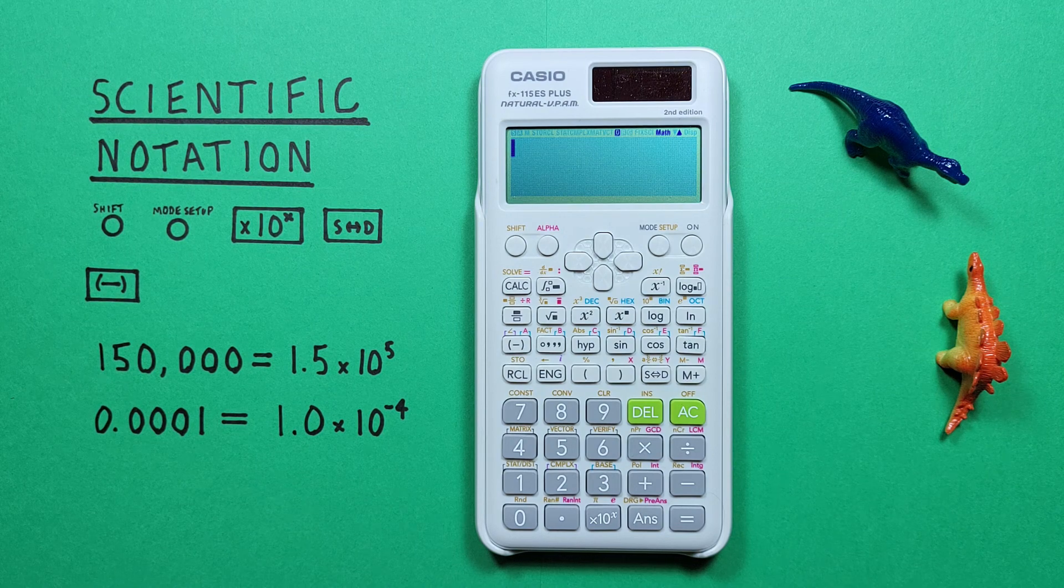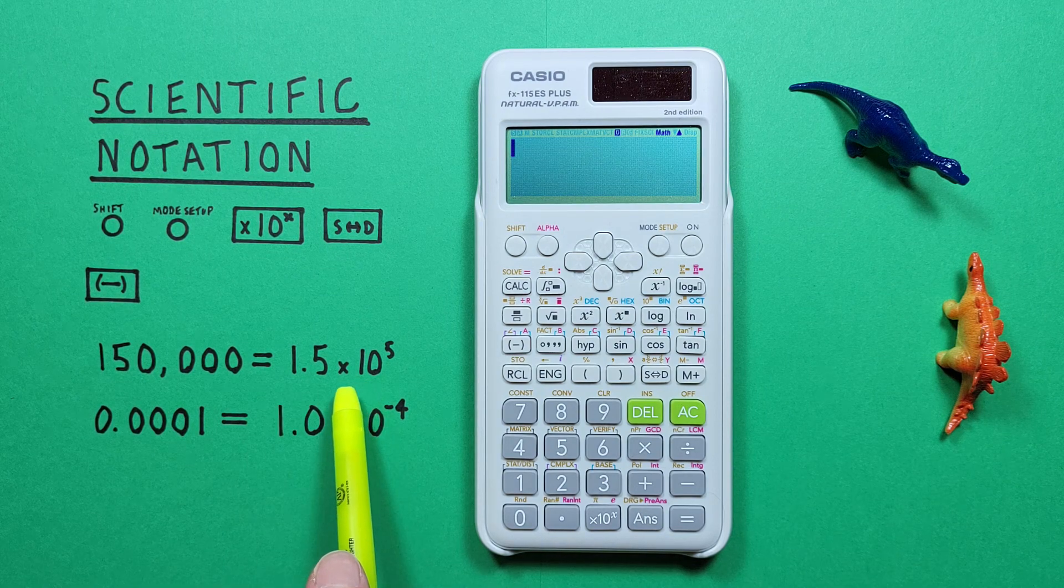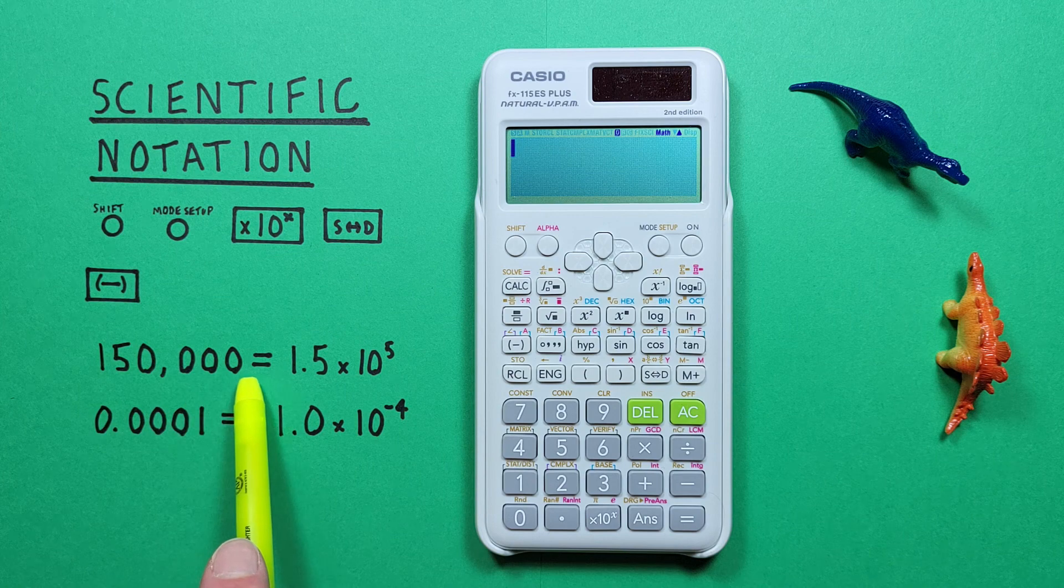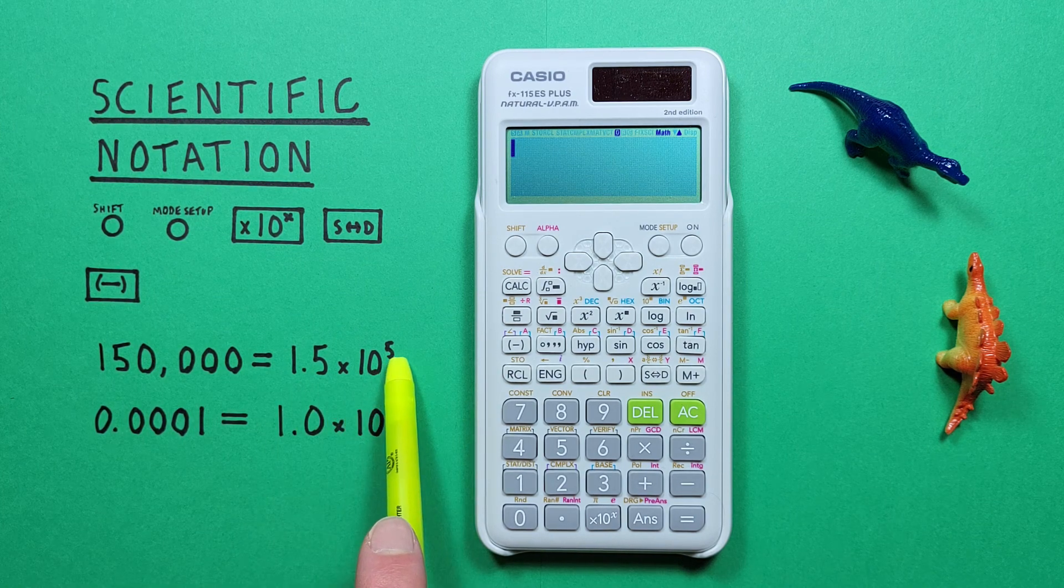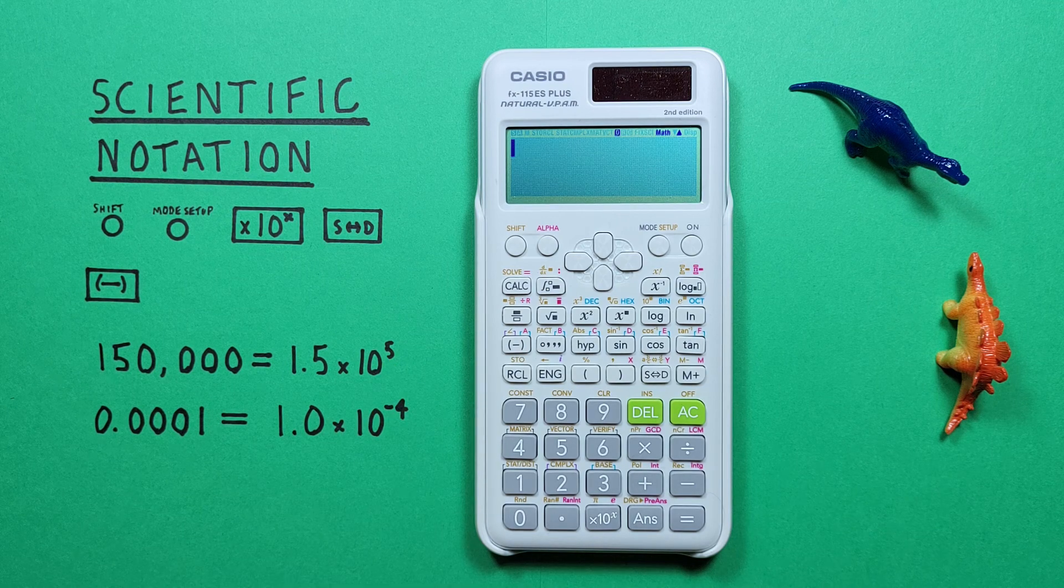But what if we're given numbers in scientific notation and want to convert those to normal mode? Well, if we're, for example, given 1.5 times 10 to the power of 5, we can enter it like this.